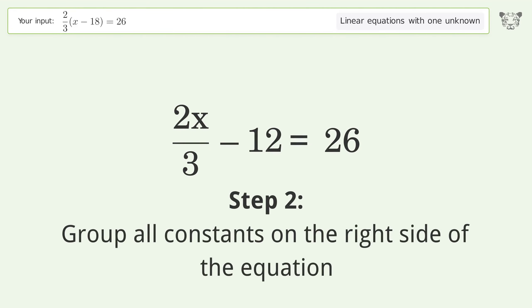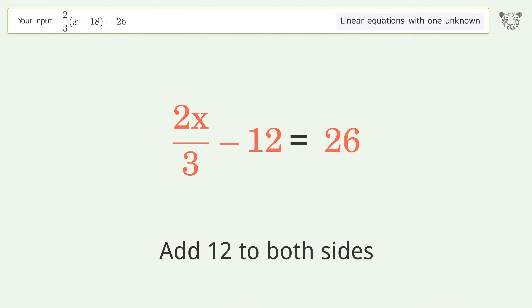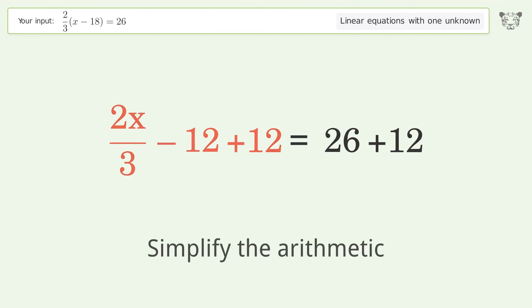Group all constants on the right side of the equation. Add 12 to both sides. Simplify the arithmetic.